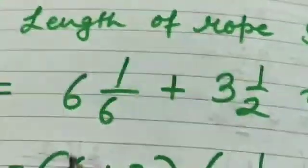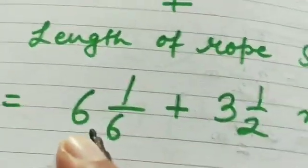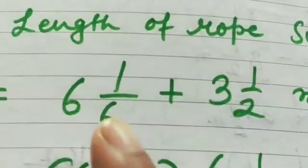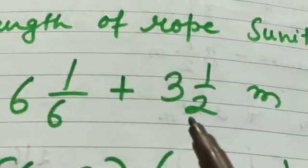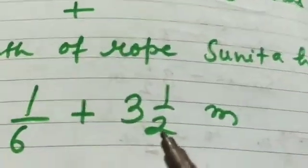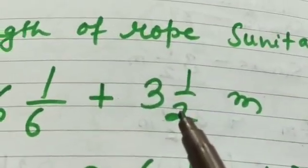The length of the rope that Soumya has is 6 1/6 meters plus the length of the rope which Sunita has, that is 3 and a half meter.